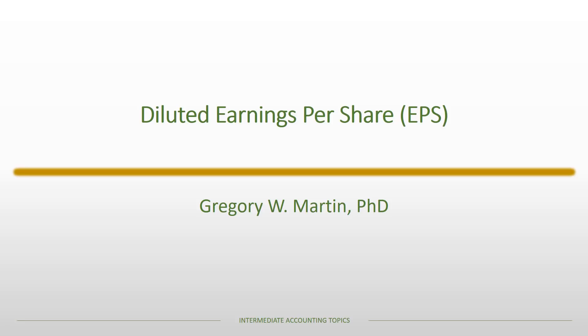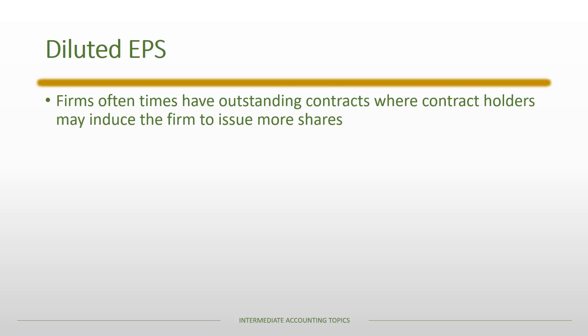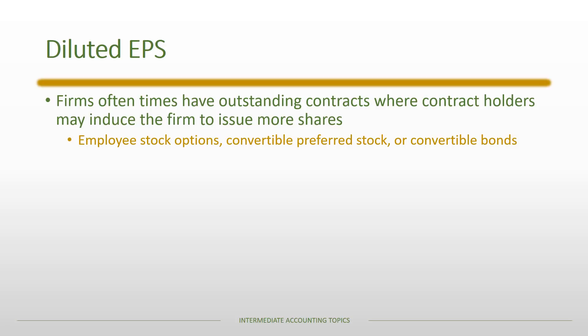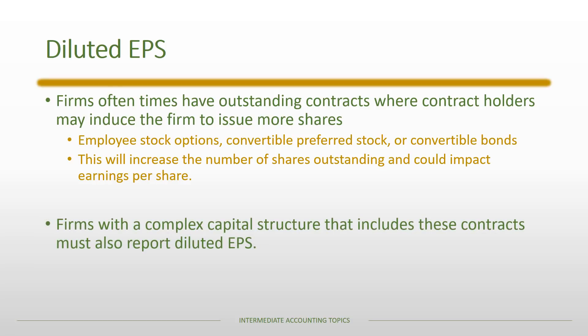This lecture is a continuation of the EPS lecture, focusing on calculating diluted earnings per share. With diluted EPS, firms often have outstanding contracts where contract holders — such as employee stock option holders, convertible preferred stockholders, or convertible bondholders — may induce the firm to issue more shares, increasing shares outstanding and potentially impacting earnings per share. Firms with a complex capital structure must report diluted EPS in addition to basic EPS.